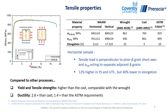When we looked at the tensile properties, we can clearly notice that the strong anisotropy in the microstructure has influenced the mechanical properties. The horizontal samples show lower ductility compared to the vertical samples. This is mainly because the tensile load is perpendicular to the prior beta grain short axis in the horizontal sample, leading to premature failure. However, horizontal samples showed marginally higher yield strength and tensile strength compared to the vertical samples. When we compared the data with conventionally built rod, cast, and ASTM requirements, WAAM Ti-64 has higher yield and tensile strength compared to the cast material and comparable properties with the rod.